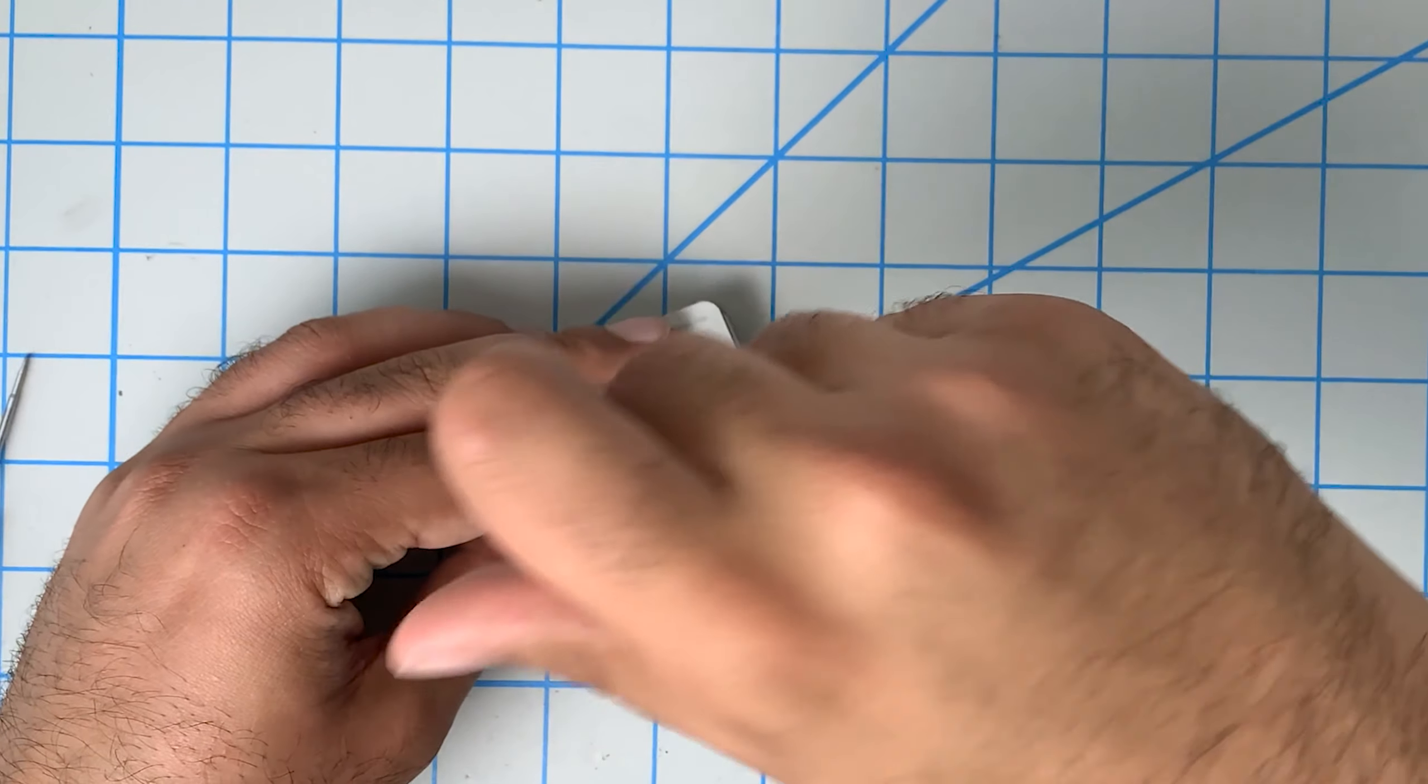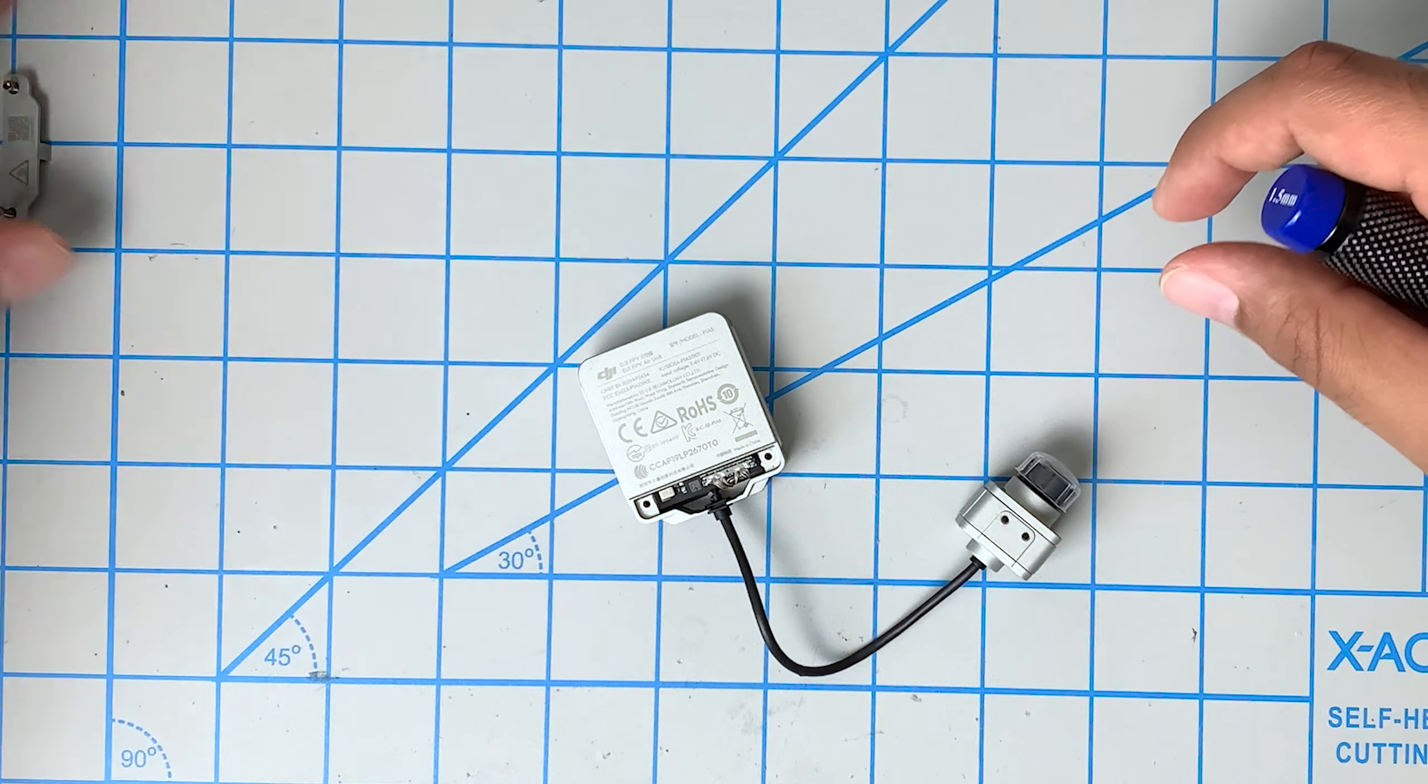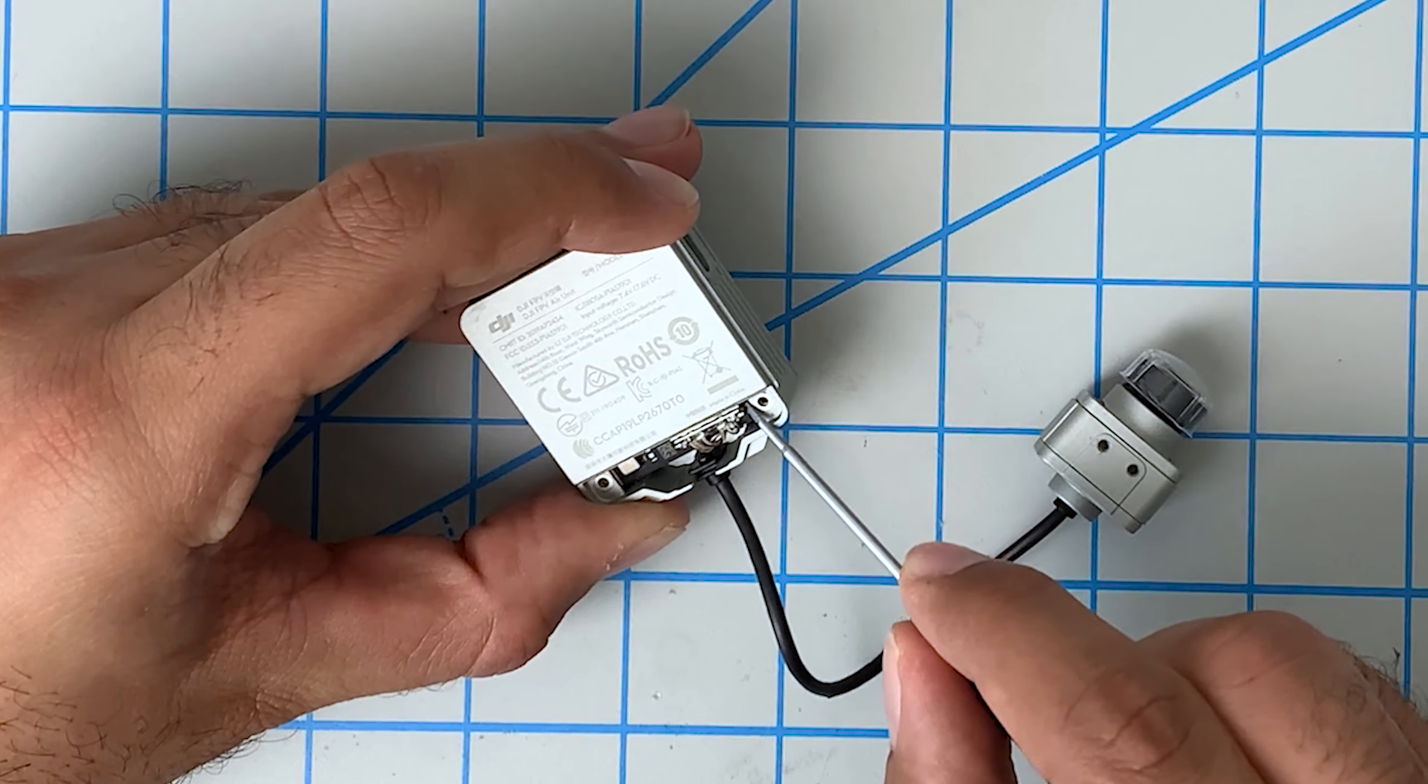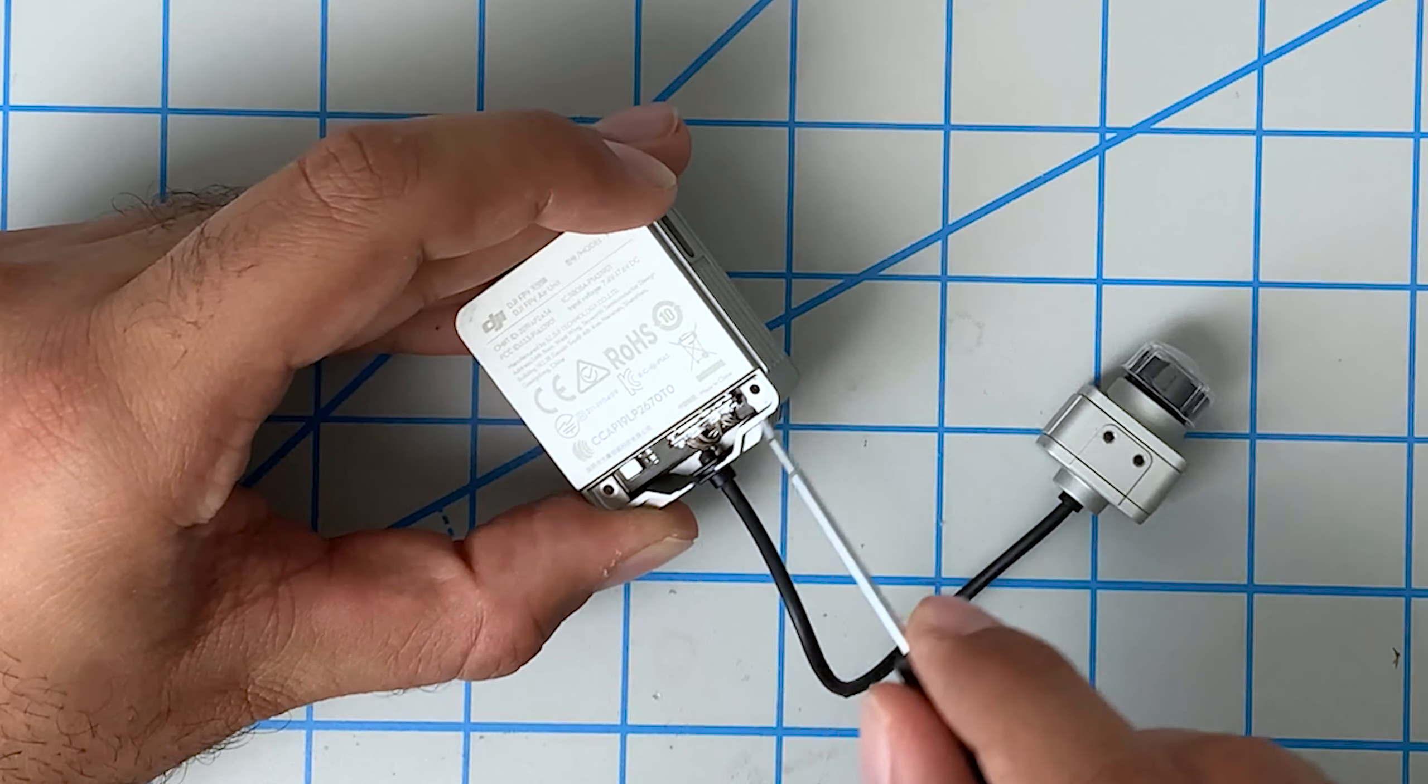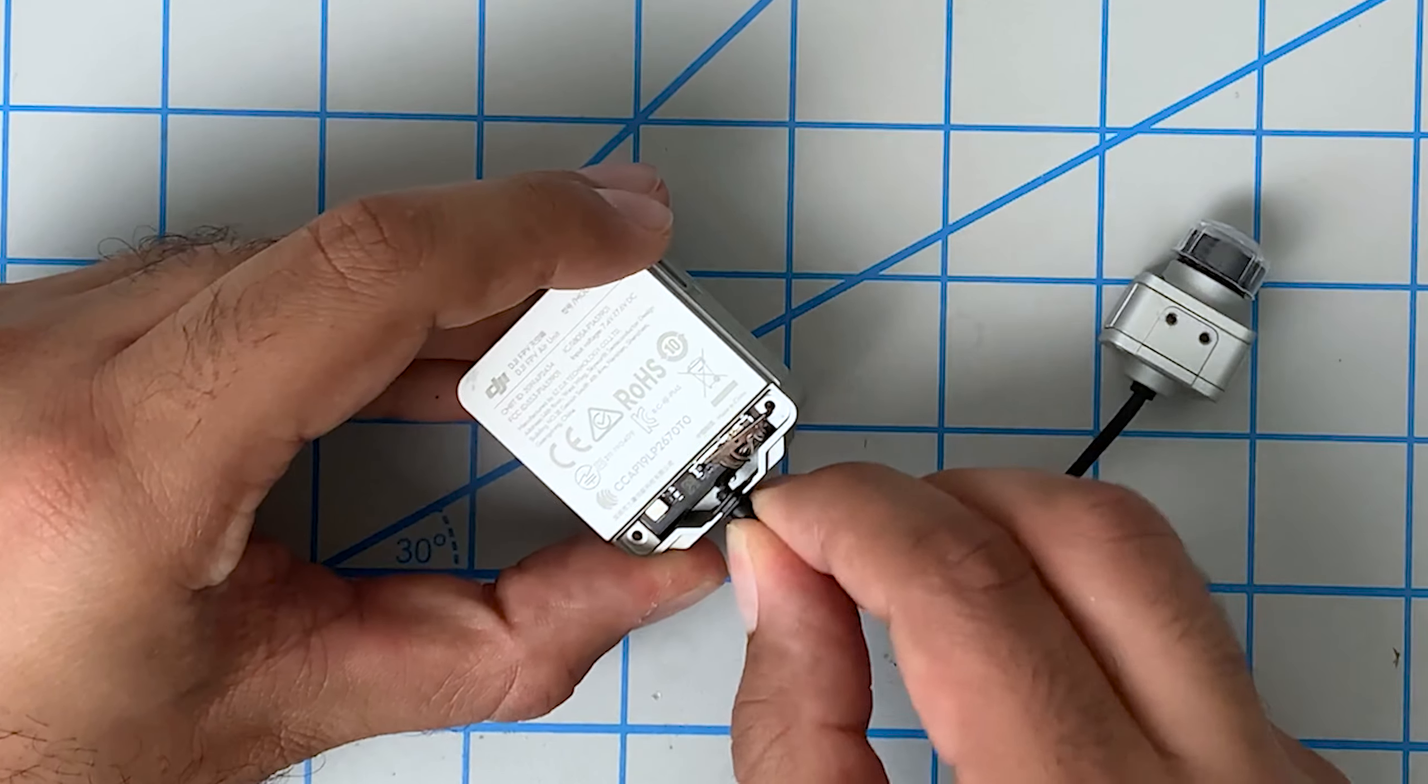We start off by opening these two screws on the air unit, which exposes the cable back here. There's two little tabs here. So you want to get on these two little tabs and you want to just work them out slowly. So a little bit on either side. There you go. Now it's out. You pull this piece out here.